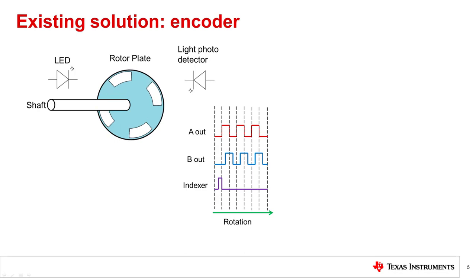These pulses correspond to the rotor movement. By monitoring both the number of pulse sequences and the relative phase of signals A and B, it is possible to track both the position and direction of rotation. The index pulse, which is generated one time for every revolution, helps the controller determine the absolute position of the encoder. Depending on the encoder resolution and the chosen step mode — either full step or microstepping — the number of encoder outputs for each input step interval will be different.